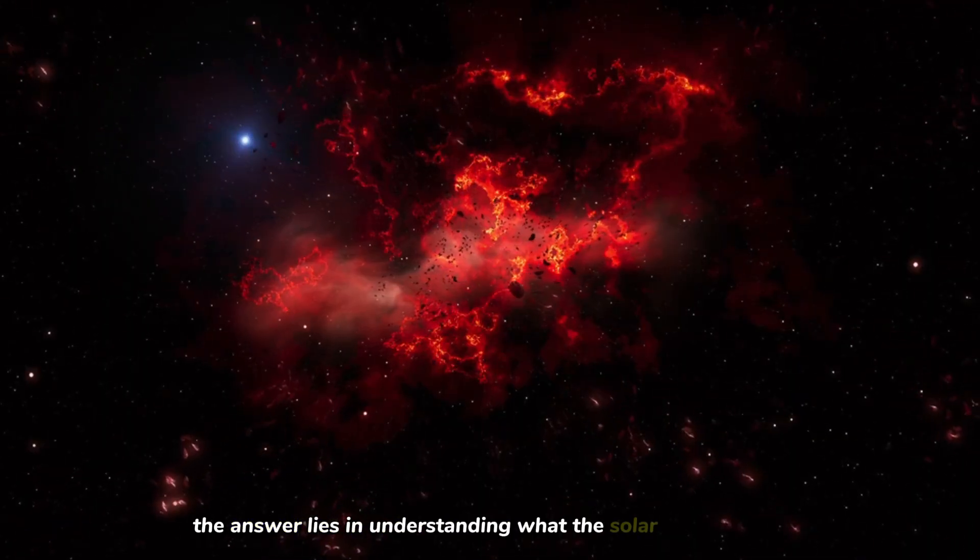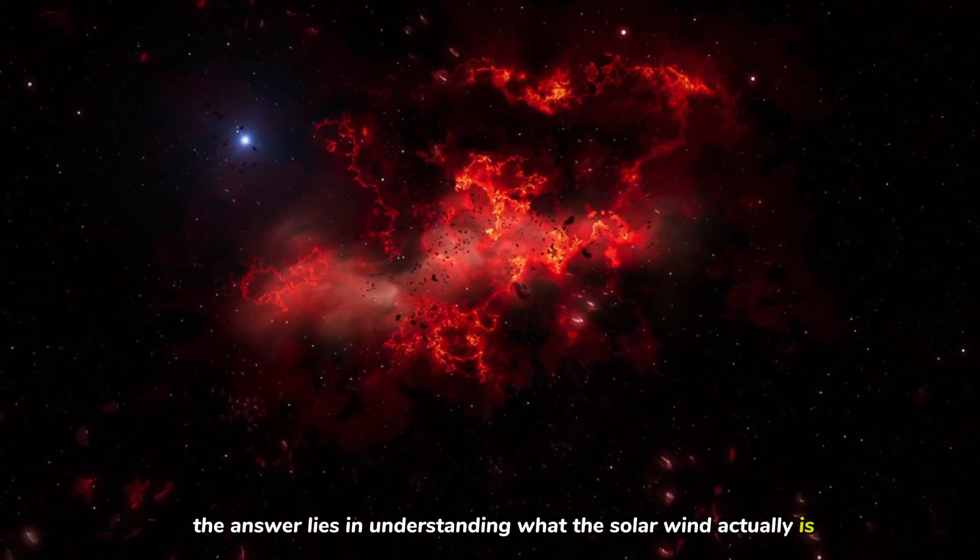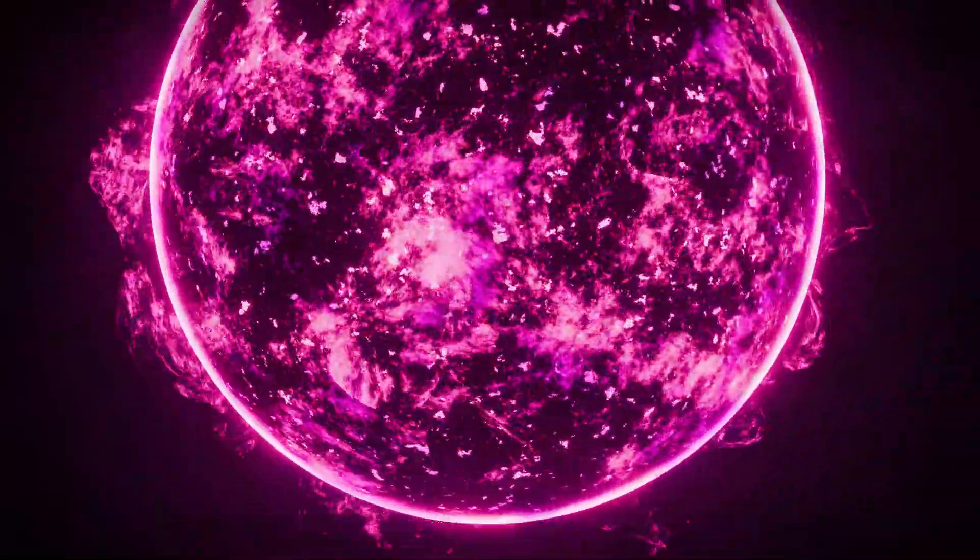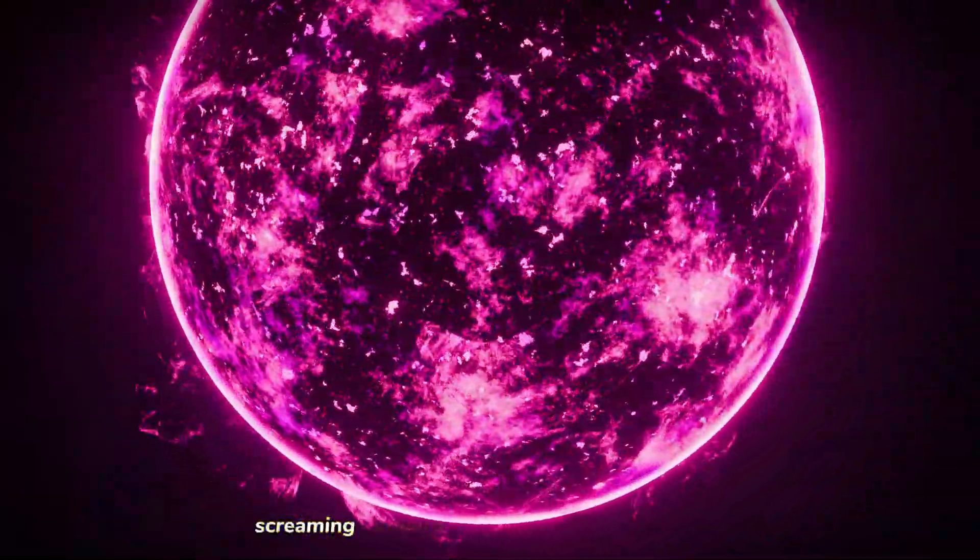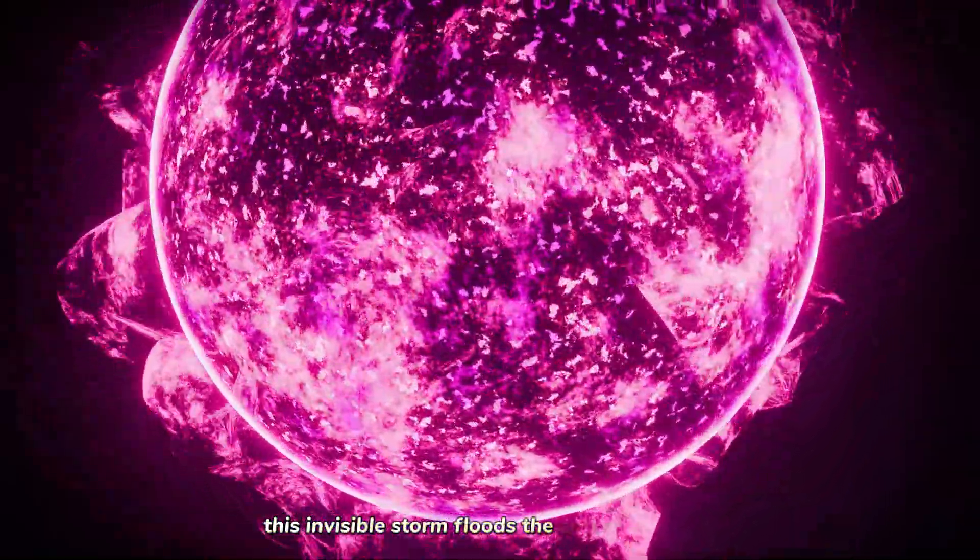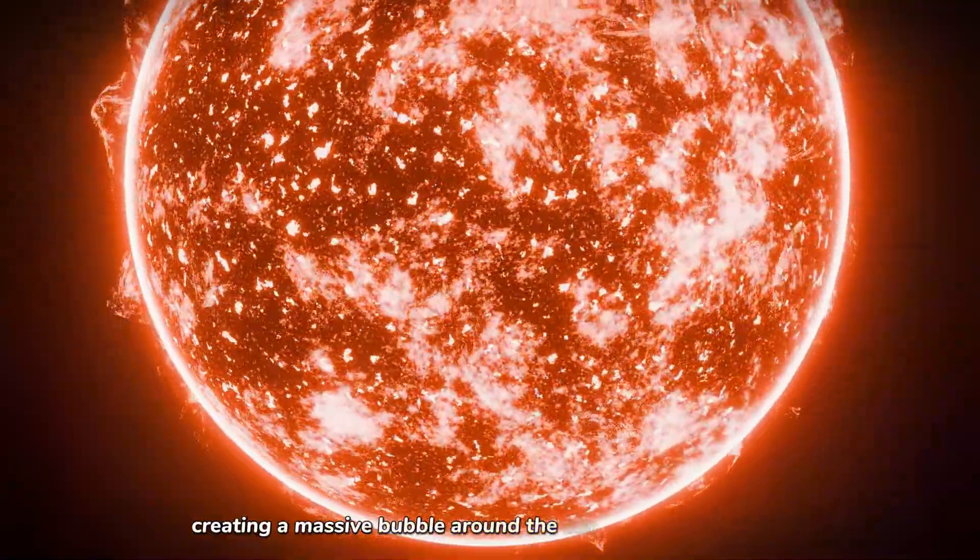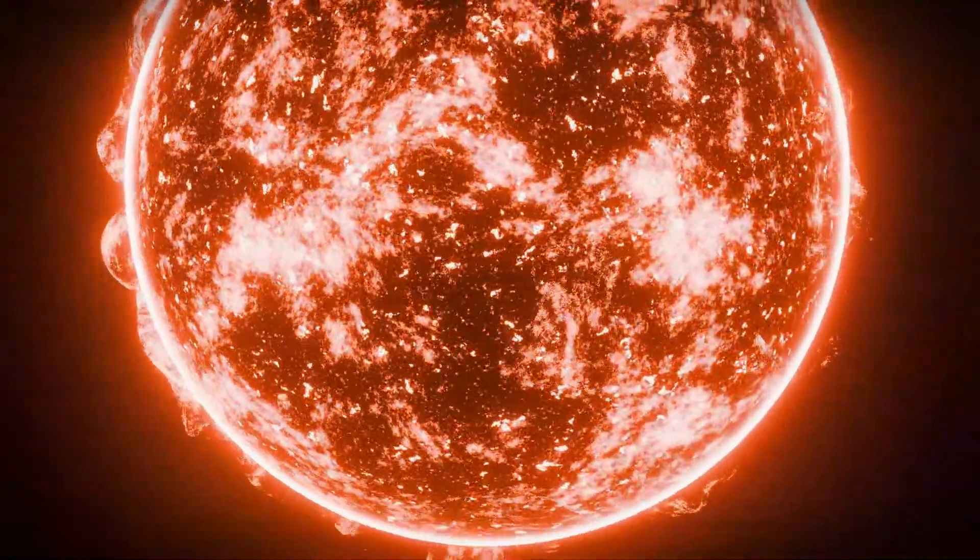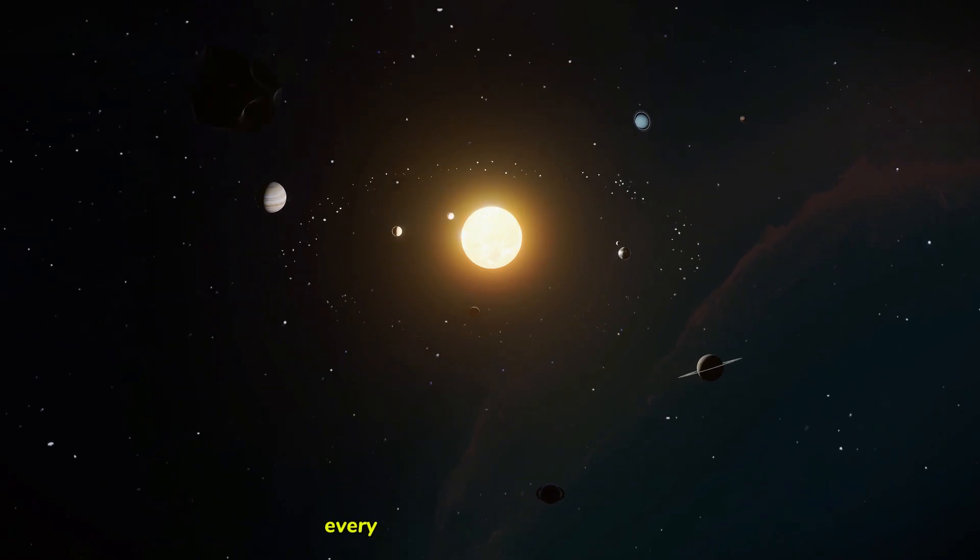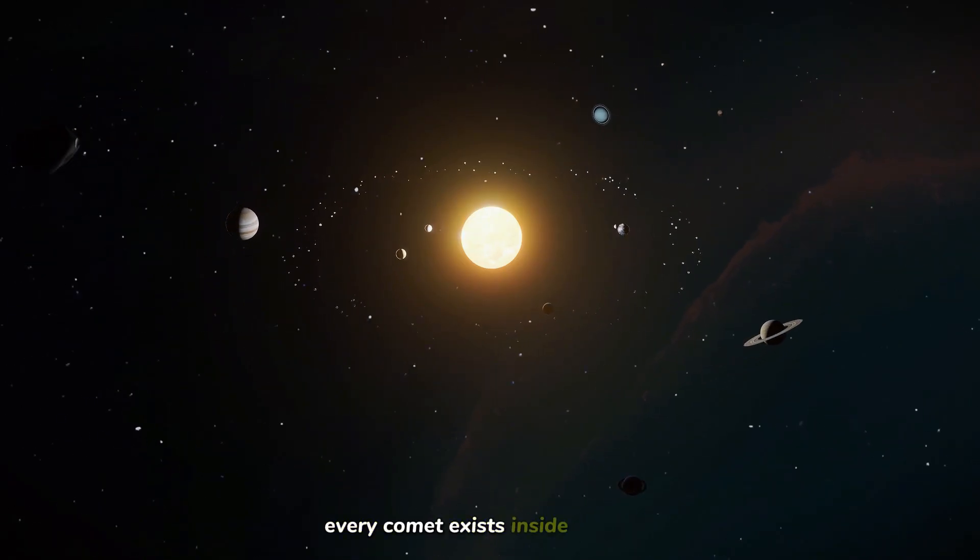The answer lies in understanding what the solar wind actually is. Every second, the sun throws off millions of tons of charged particles, electrons and protons screaming outward at over a million miles per hour. This invisible storm floods the entire solar system, creating a massive bubble around the sun called the heliosphere. Everything we've ever known, every planet, every asteroid, every comet, exists inside this bubble.